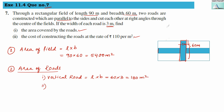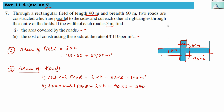Second, we find the area of the horizontal road. Its length is the same as the rectangular field's length, so that is 90 meters, and its breadth is 3 meters. Horizontal road area = l × b = 90 × 3 = 270 meter square.